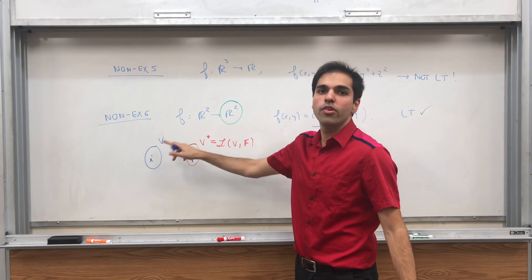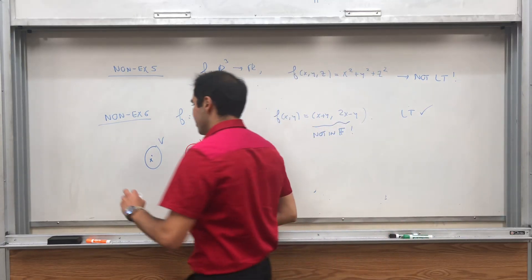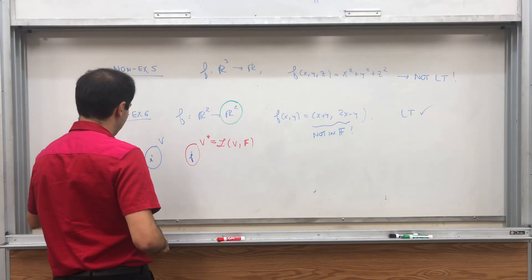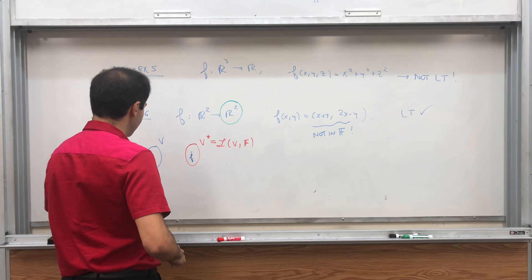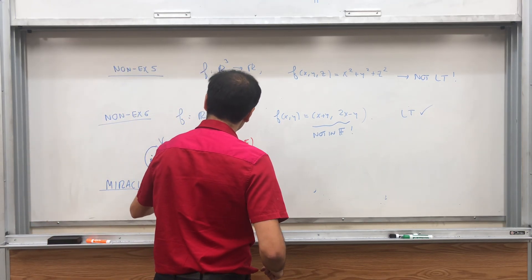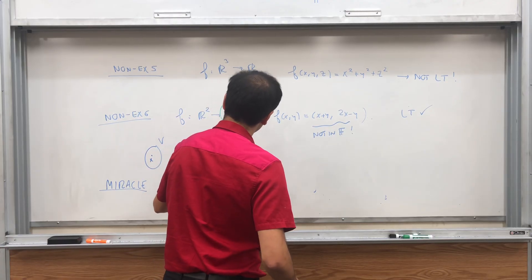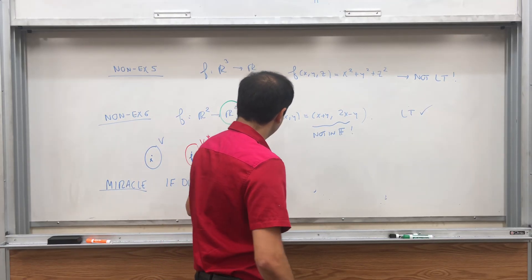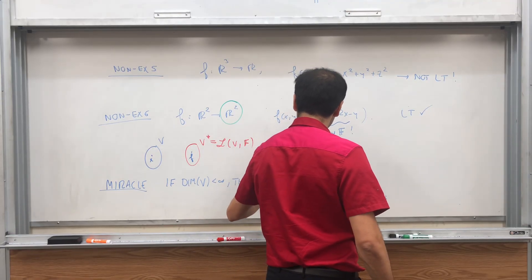So fact, or I guess that's what I call it. Not fact, more than a fact, miracle. If the dimension of V is finite, so if V is finite dimensional, then V and V star are isomorphic.